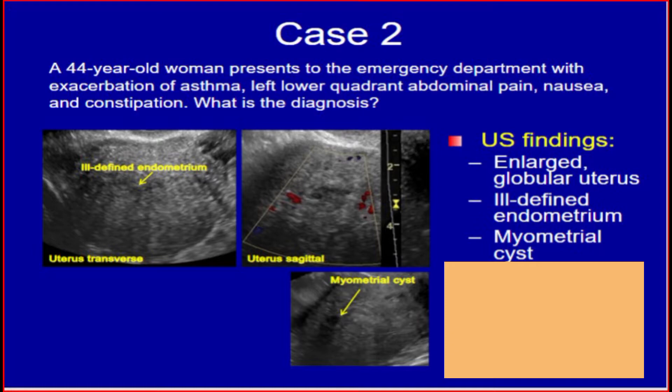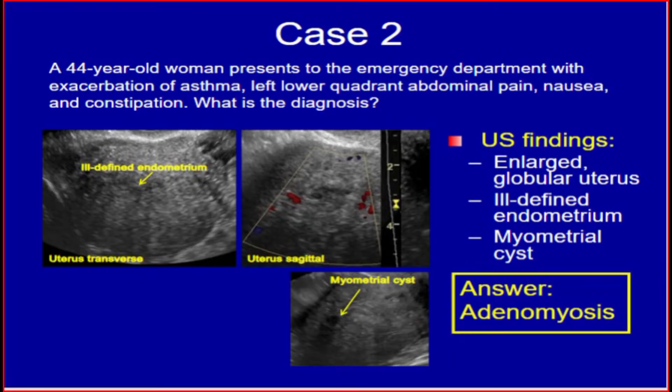Case 2. A 44-year-old woman presents to the emergency department with exacerbation of asthma, left lower quadrant abdominal pain, nausea, and constipation. What is the diagnosis? Ultrasound findings: enlarged globular uterus, ill-defined endometrium, and myometrial cysts. The answer is adenomyosis.